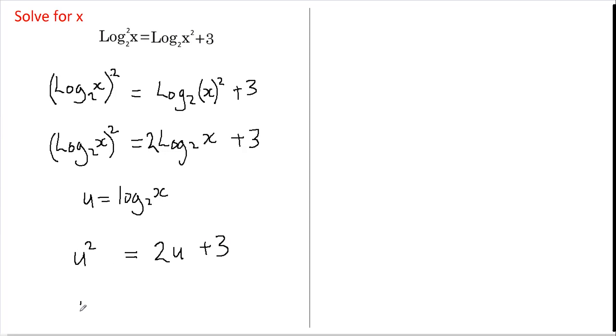we've actually got just u squared here and this equals 2 lots of u plus 3. And if we rearrange this, we've got u squared minus 2u minus 3 equals 0. So we've got a quadratic to solve.